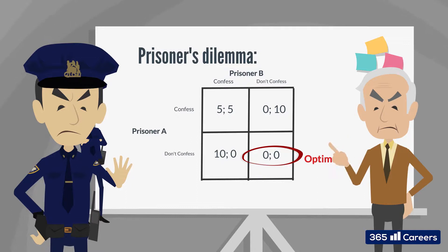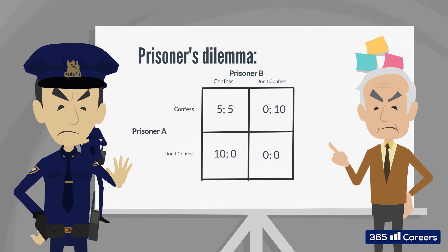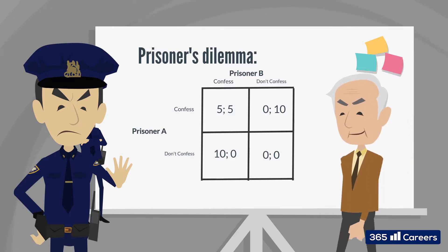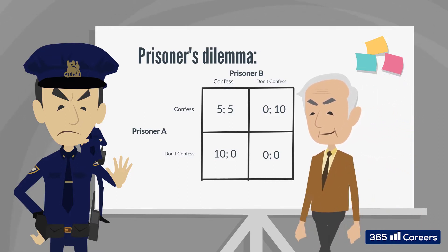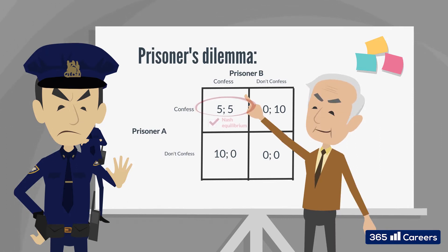John Nash, the famous Nobel Prize winner portrayed in the movie A Beautiful Mind, came up with a solution known as Nash's Equilibrium. He proved that if a player has chosen a strategy and other players can't benefit by changing their strategies, then we would have an equilibrium. In the Prisoner's Dilemma, if one of the prisoners confesses, he would face a zero or five-year sentence — much better than facing zero or ten years. The optimal global solution is to deny confessing; however, given that prisoners cannot communicate, they will choose a solution optimizing their own utility.